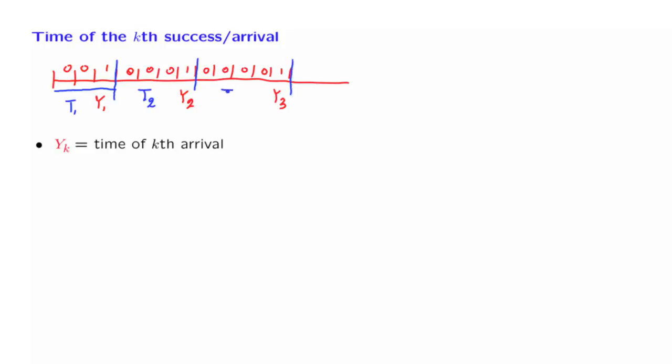And similarly, we will call t3 the time between the second and the third arrival. So we define, in general, tk to be the difference between two consecutive arrival times.